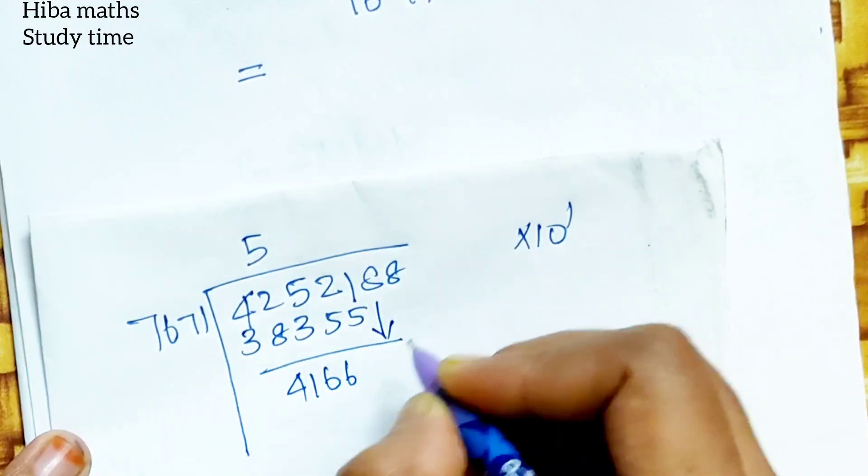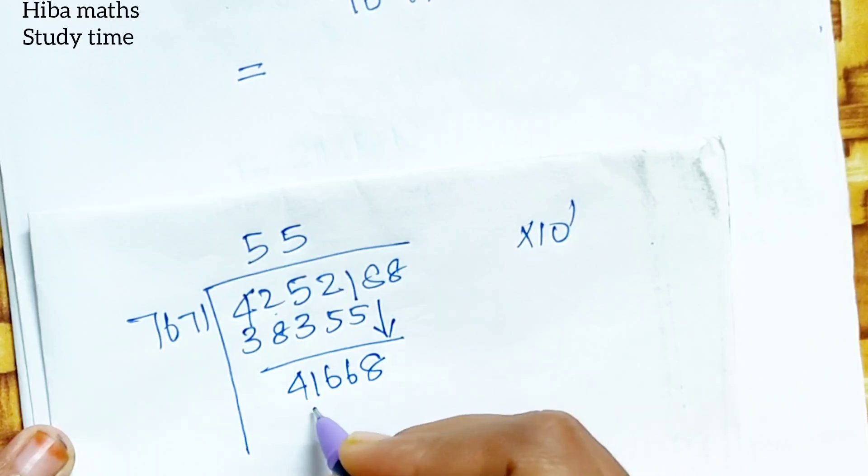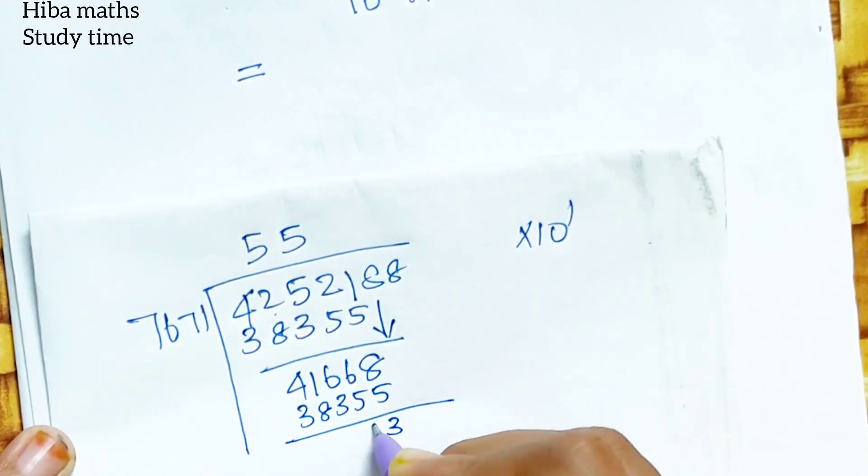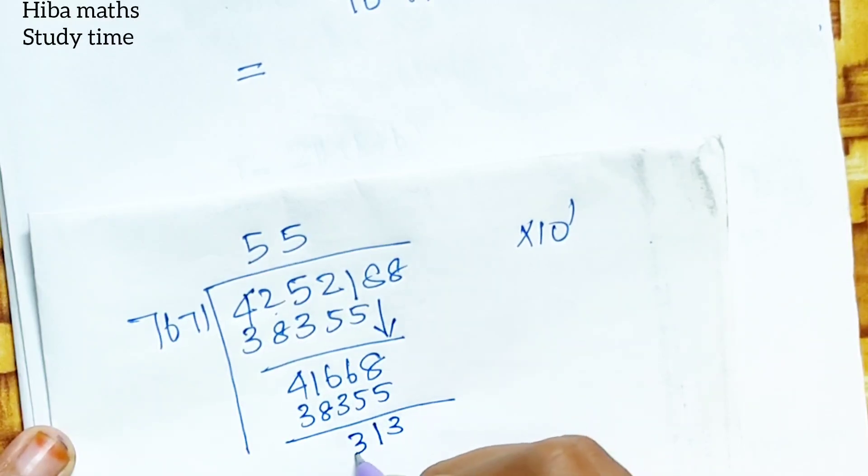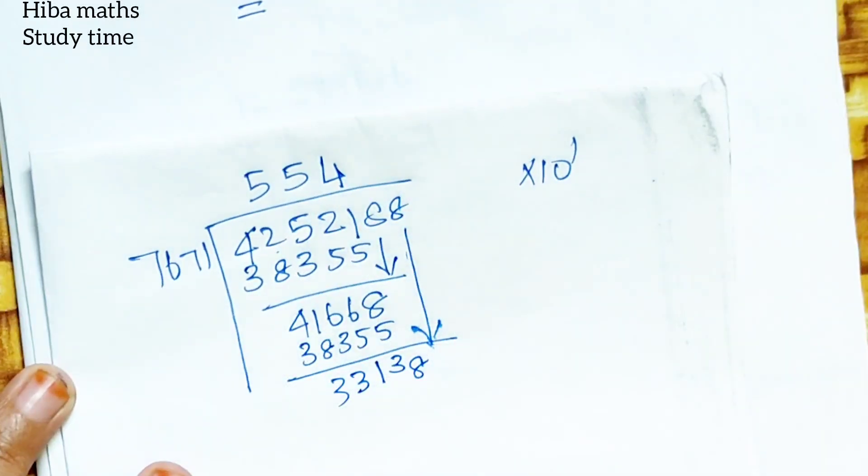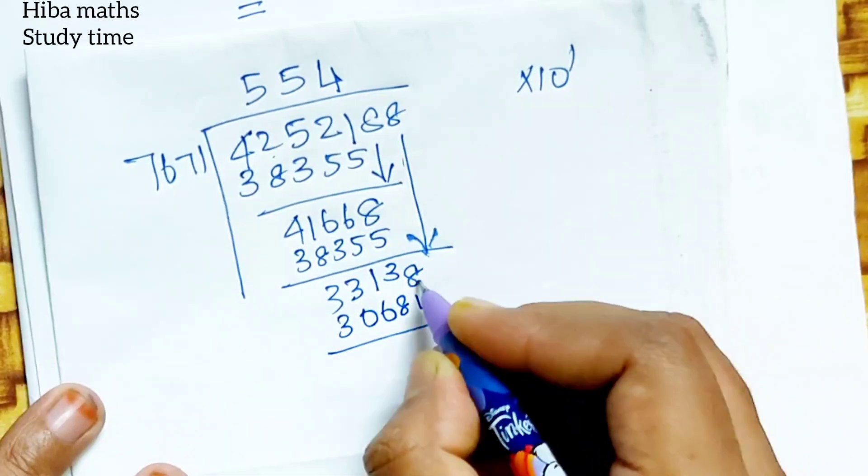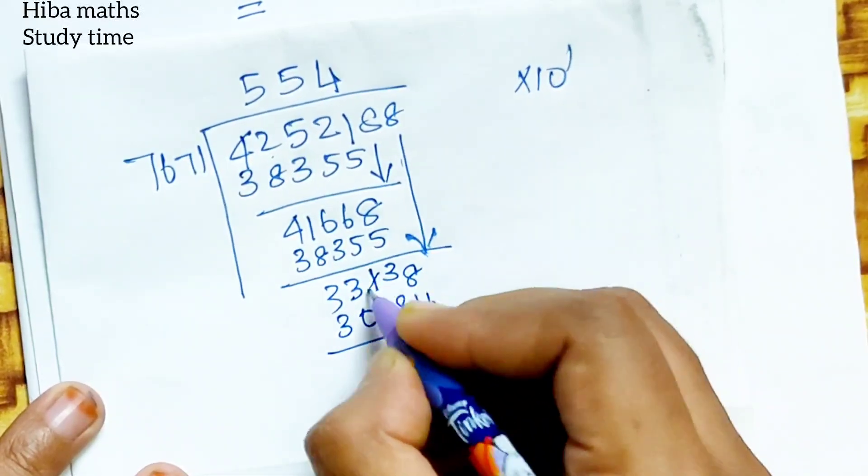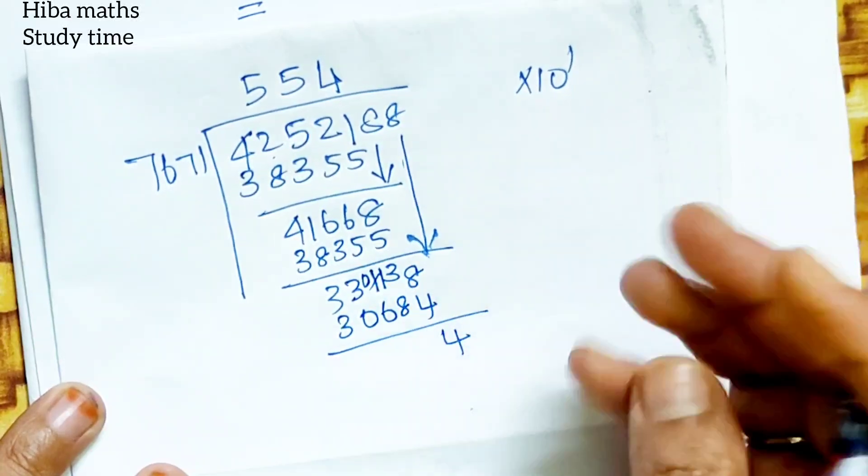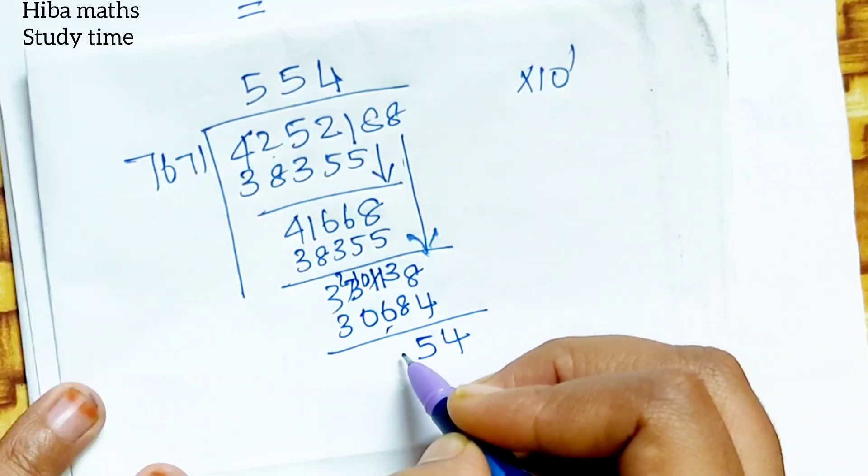Now we need to solve 4,166. Now we need to do 8. Now we need to do 42, 41. Now we need to do 38,355. This is 3. This is 1. This is 3. Now we need to do 8. Now we need to do 4 times. Now we need to do 3, 0, 6, 8, 4, what is 4, 0. Now we need to do 10, 8, 9, 10, 5. The 2 from 10.